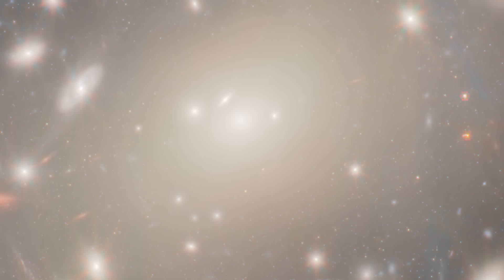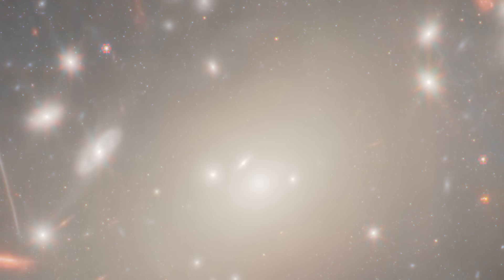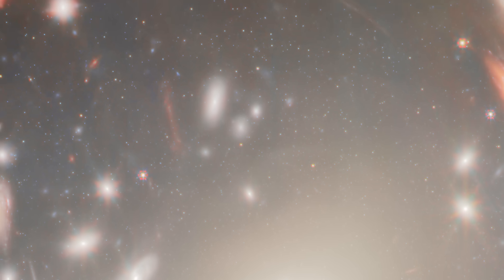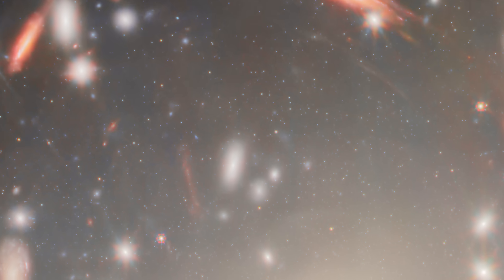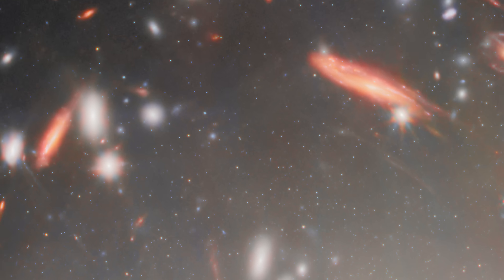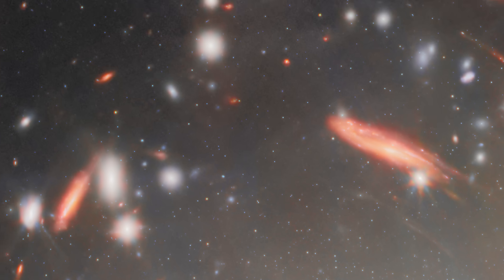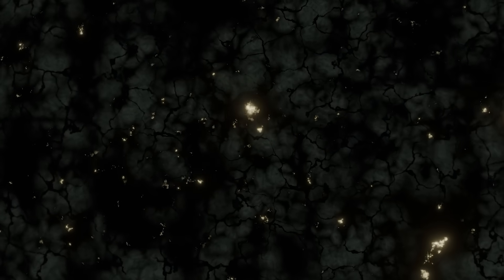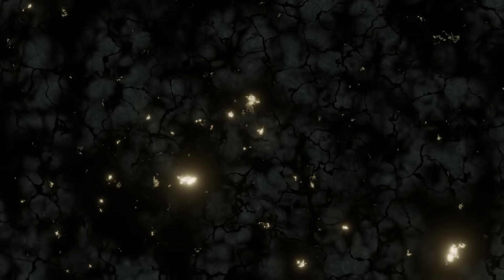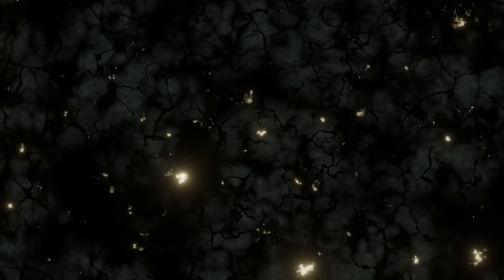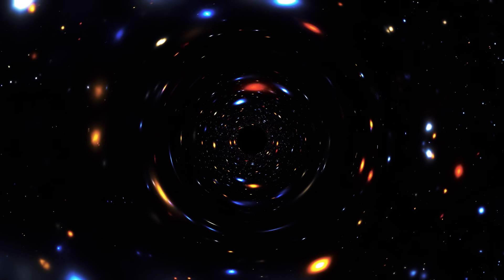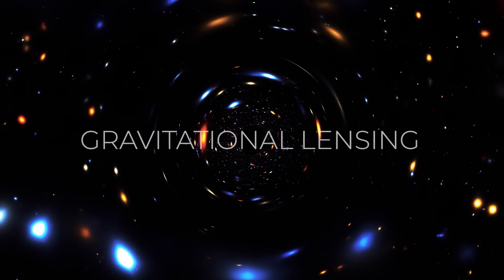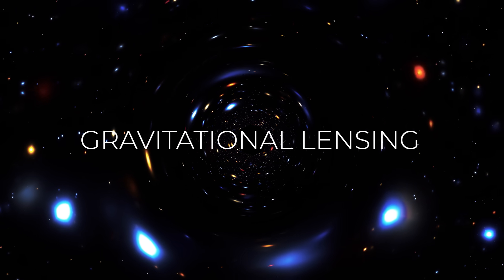Abell S1063 is a gigantic cluster of galaxies, all bound together by gravity. But that's not the whole story. Surrounding this cluster is something we can't see directly: dark matter. While it doesn't emit or reflect light, we know dark matter is there because of the way it distorts the space around it. It's this invisible mass that plays a key role in one of the most fascinating phenomena in astronomy, gravitational lensing.